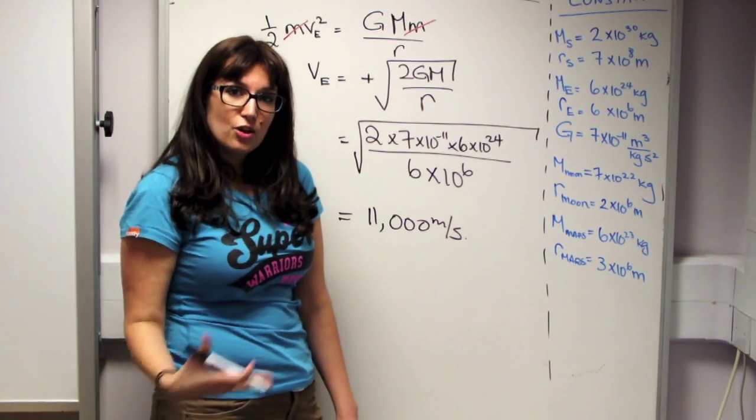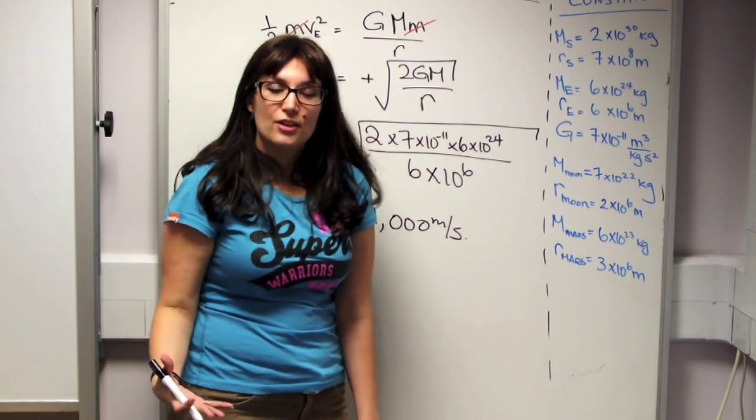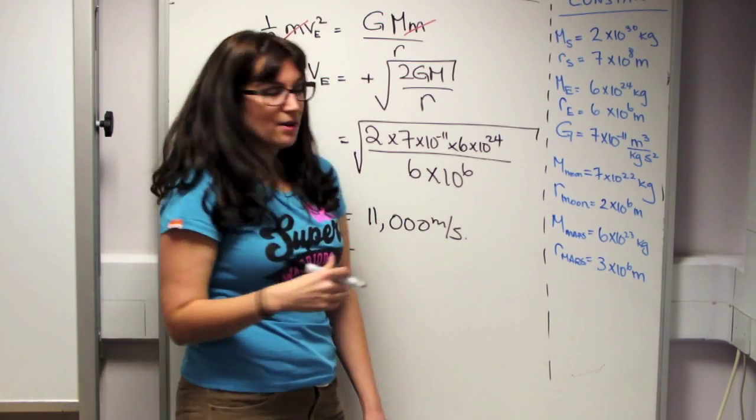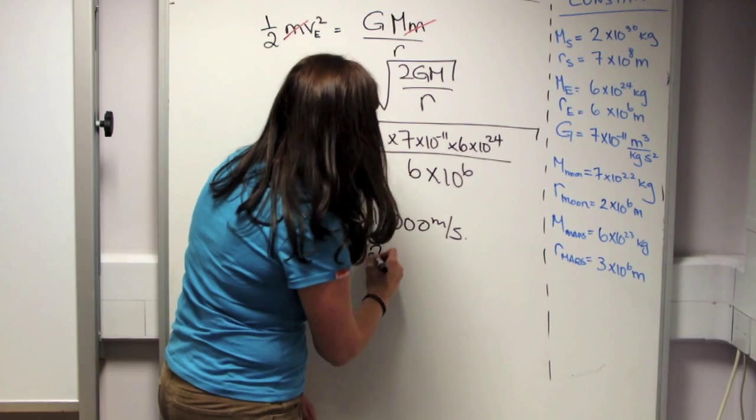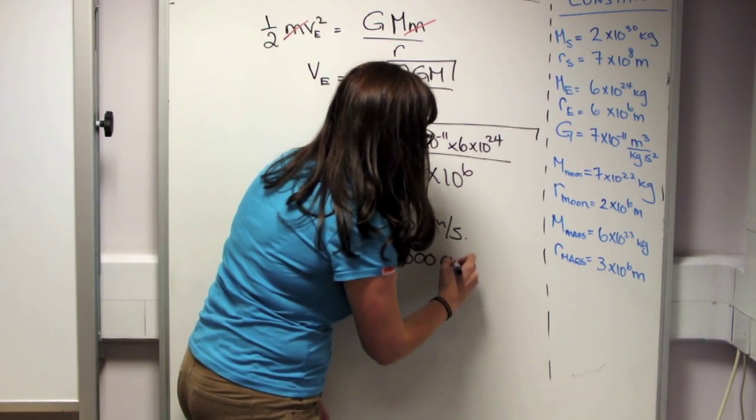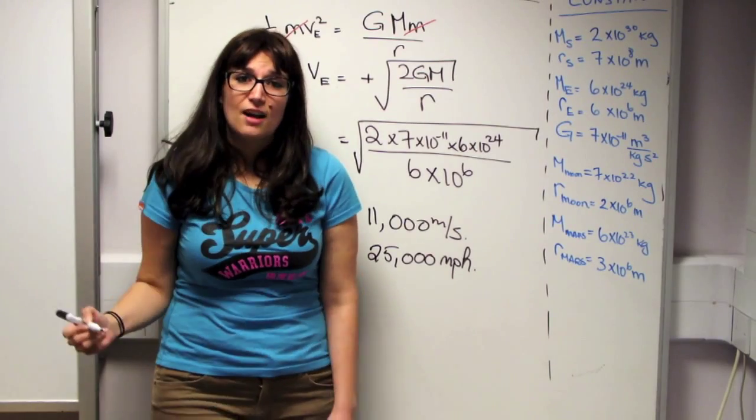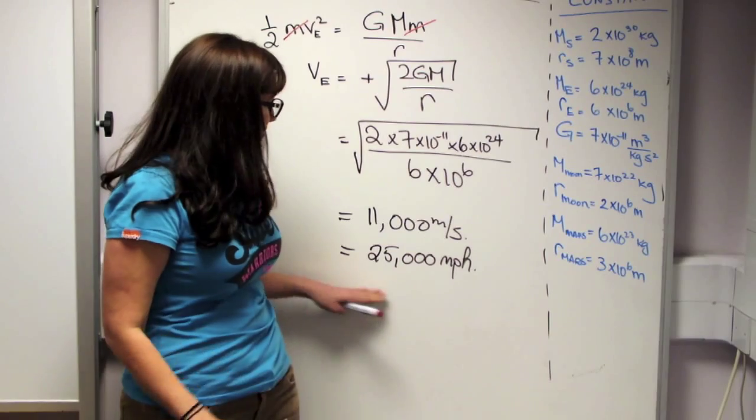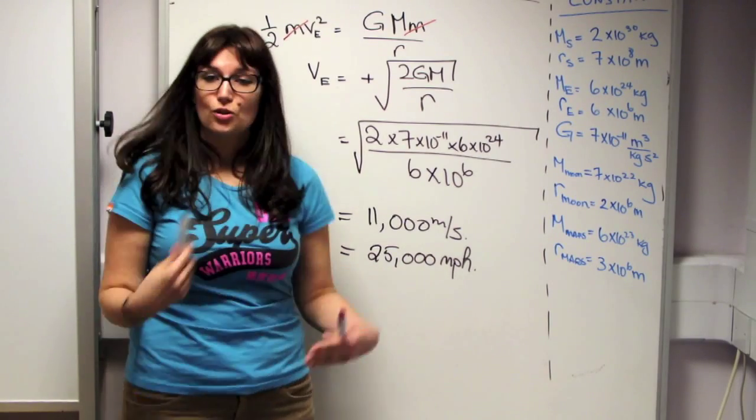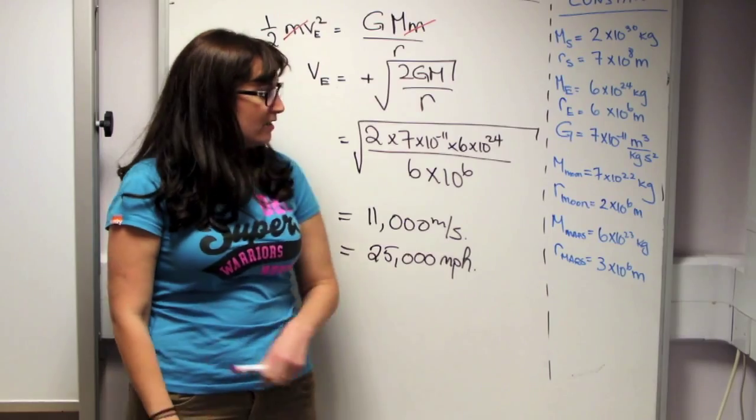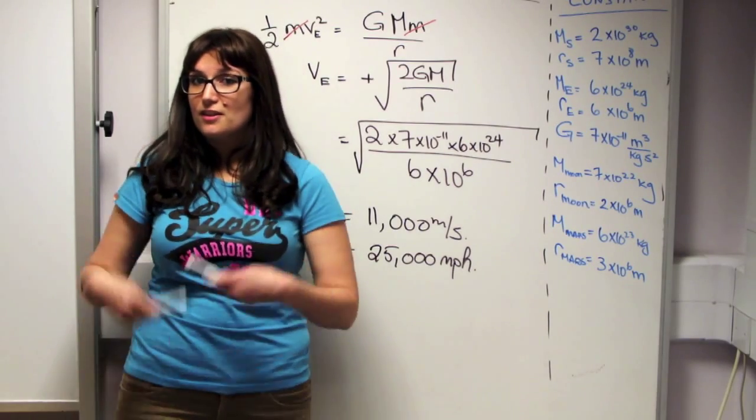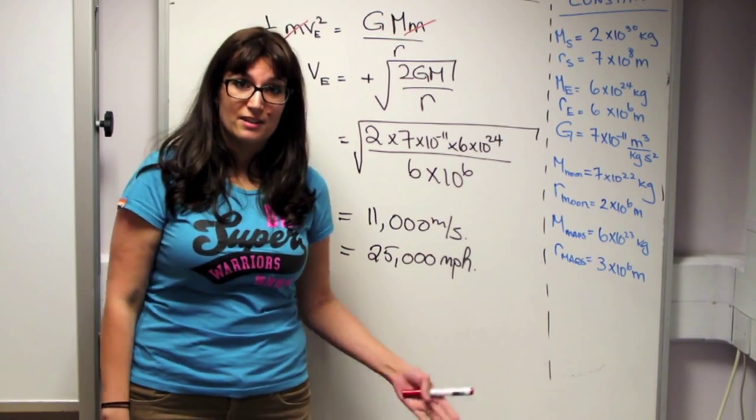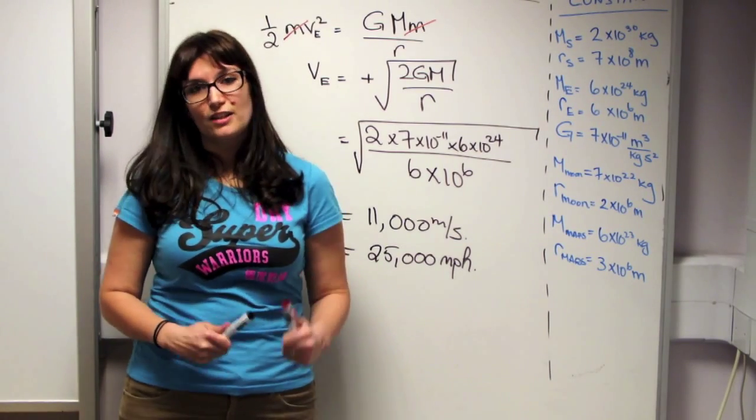Now, if you're watching this video in the UK or in the US, you might be more comfortable with miles per hour. So 11,000 meters per second is about 25,000 miles per hour. And this is how fast we need to launch any kind of satellite that leaves the gravitational pull of the Earth or any kind of rocket. So when we launched the Curiosity probe, we had to launch it at about 25,000 miles per hour so that it could reach Mars and escape the gravitational attraction of the Earth.